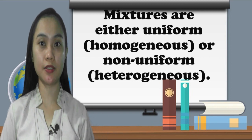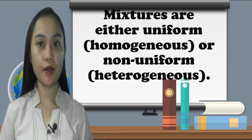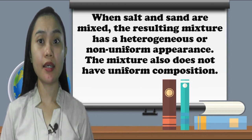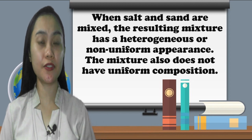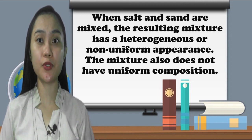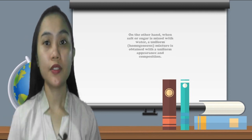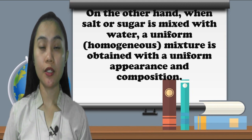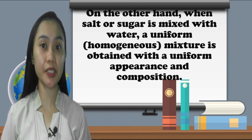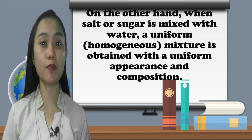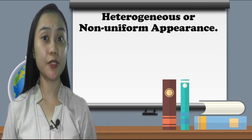When salt and sand are mixed, the resulting mixture has a heterogeneous or non-uniform appearance. The mixture also does not have a uniform composition. On the other hand, when salt or sugar is mixed with water, a uniform or homogeneous mixture is obtained, with a uniform appearance and composition.